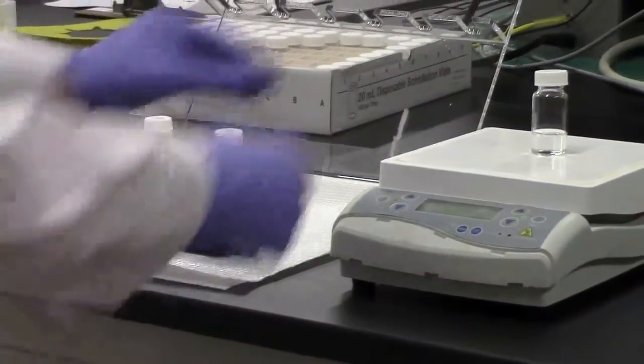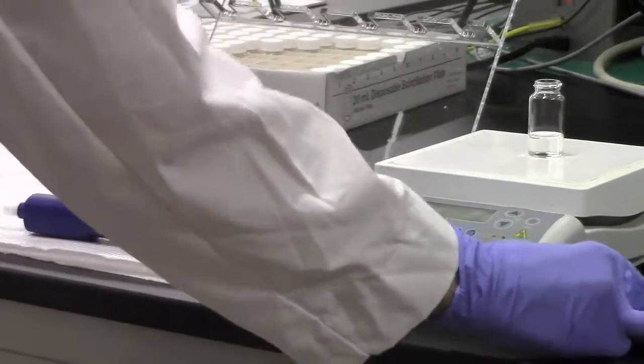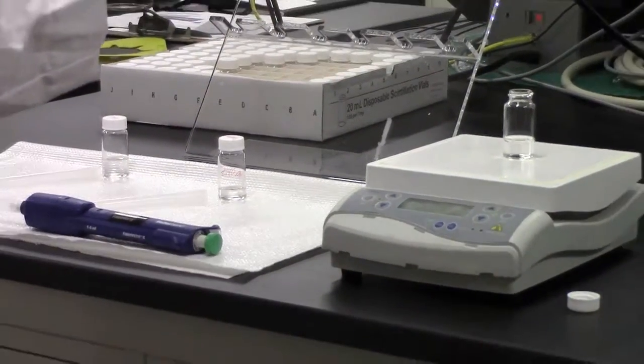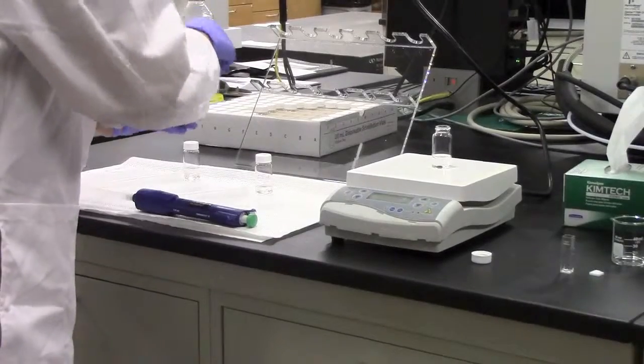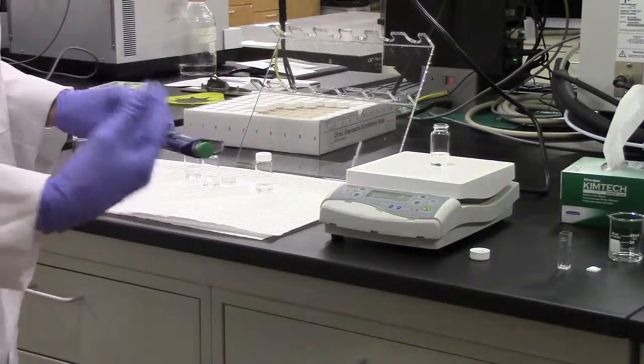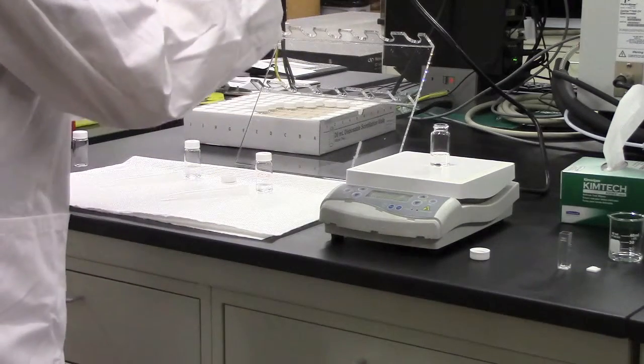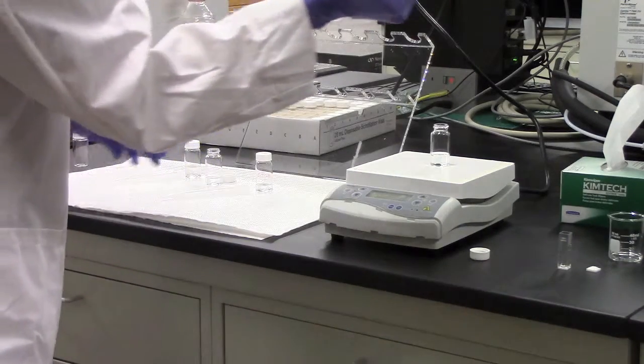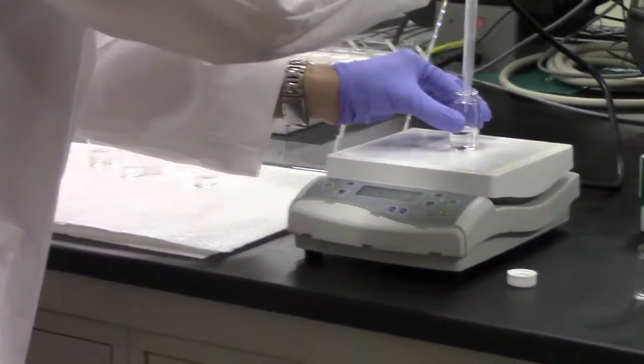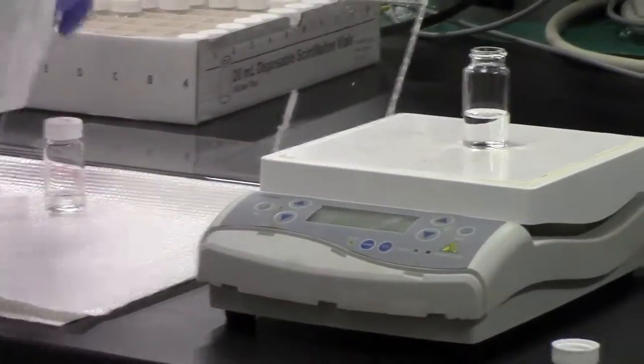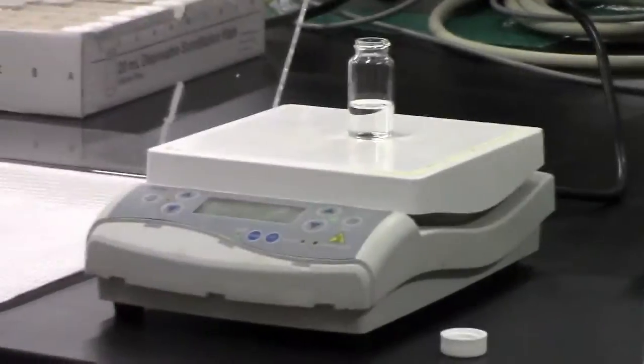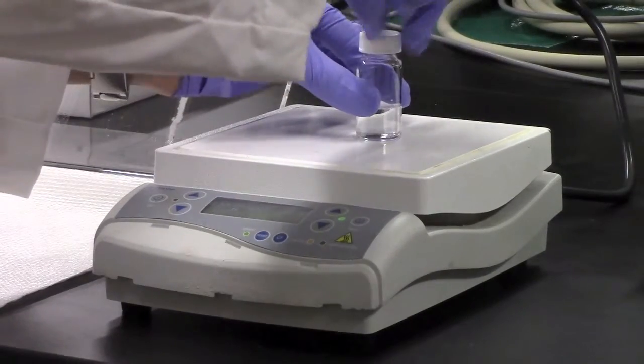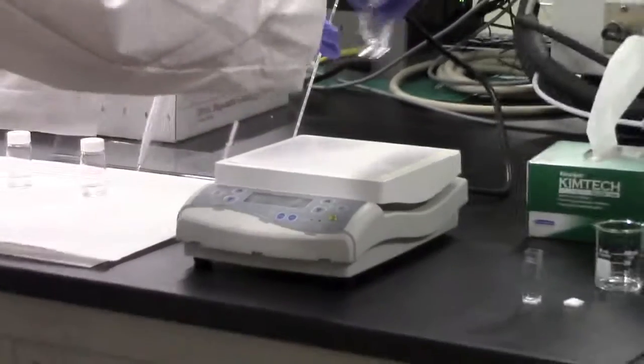Once the ethanol and zinc acetate solutions are warmed up sufficiently, you'll want to add in 1.8 milliliters of the tetramethyl ammonium hydroxide solution, which will then initiate the actual reaction. Take a micro-pipetter and a tip that's specific to it and add it in.